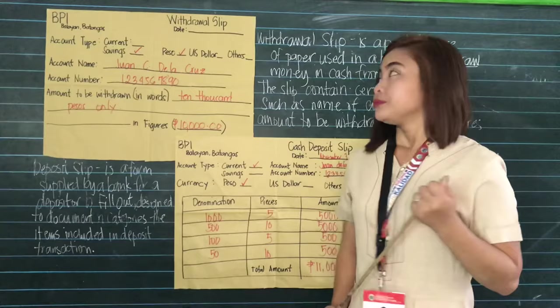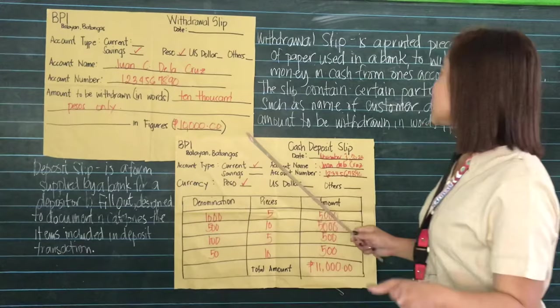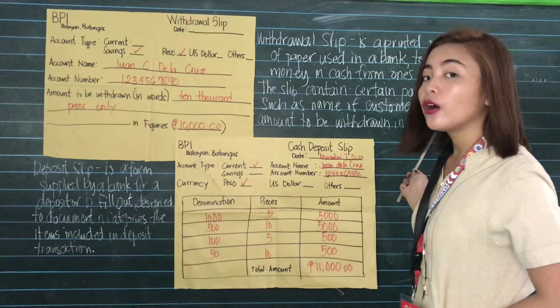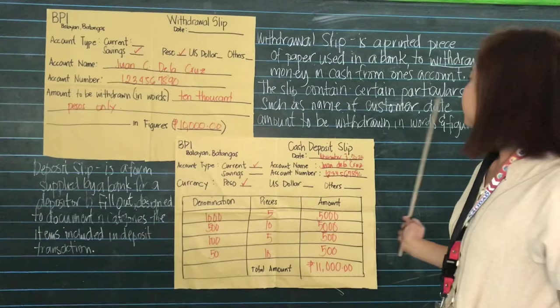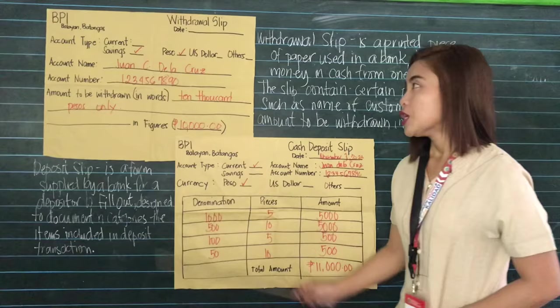Before that, let us define what is a withdrawal slip. A withdrawal slip is a printed piece of paper used in a bank to withdraw money in cash from one's account. The slip contains certain particulars such as name of the customer, date, and amount to be withdrawn in words and in figures.